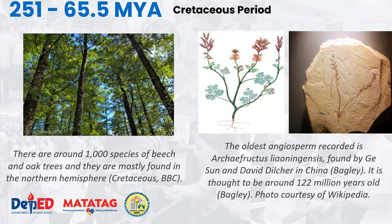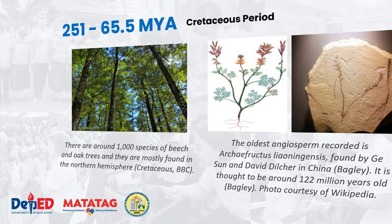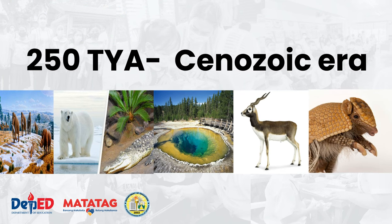During the Cretaceous period, there were around one thousand species of beech and oak trees, mostly found in the northern hemisphere. The oldest angiosperm recorded is Archaefructus liaoningensis, found by Jesson and David Dilcher in China — 122 million years ago. That is the oldest flora found from that time.